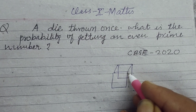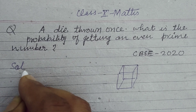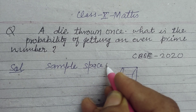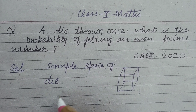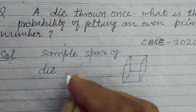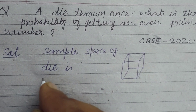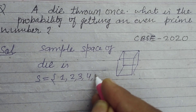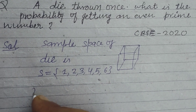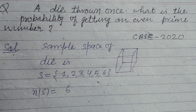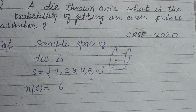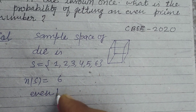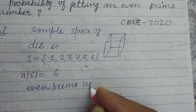So the sample space of a die is {1, 2, 3, 4, 5, 6}, so n(S) is equal to 6. Here we need to find the probability of getting an even prime number.